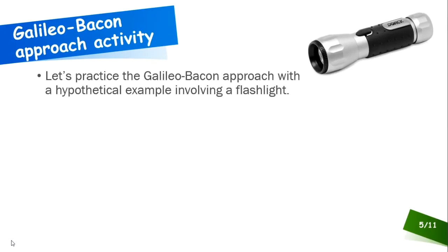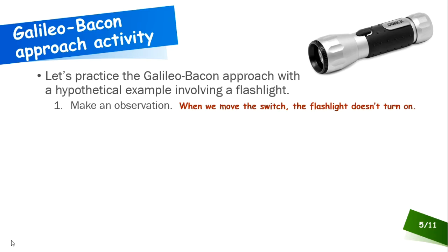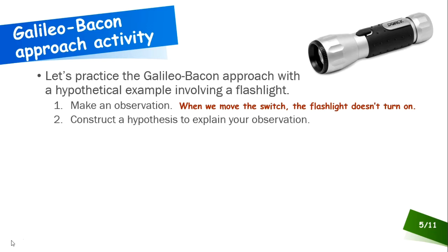Let's practice using this Galileo-Bacon approach with a hypothetical example involving a flashlight. The first step is to make an observation. The observation that we make when we examine our flashlight is that it doesn't turn on when we move the switch. That's a legitimate observation. So now the next step in our method is to construct a hypothesis that explains the observation.